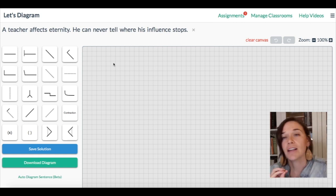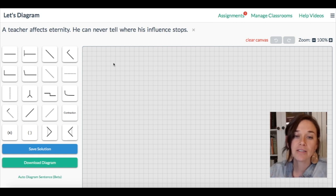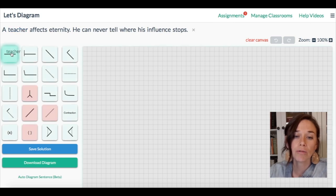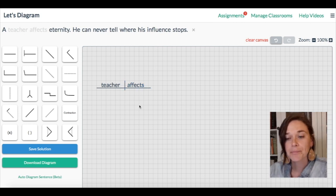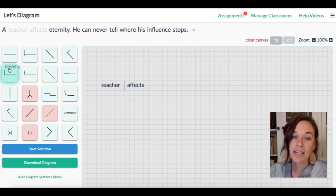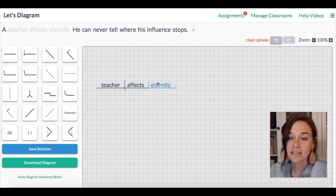We always start by identifying the subject and the verb. The subject tells us whom or what the sentence is about. This first sentence is about the teacher. A teacher affects eternity. Affects here with an A is a verb, and it needs to have something called a direct object. We can say a teacher affects what, and that question is answered by this word here, eternity. This is the direct object.